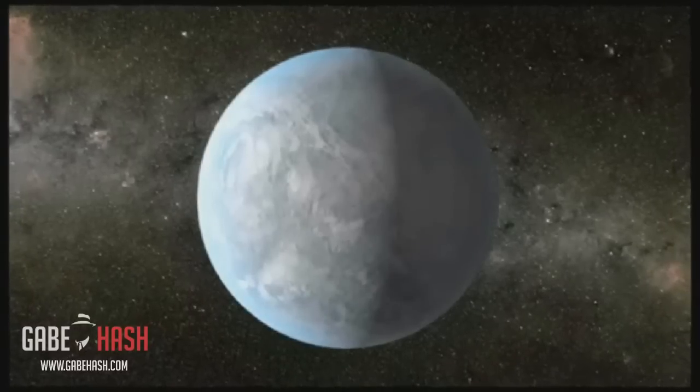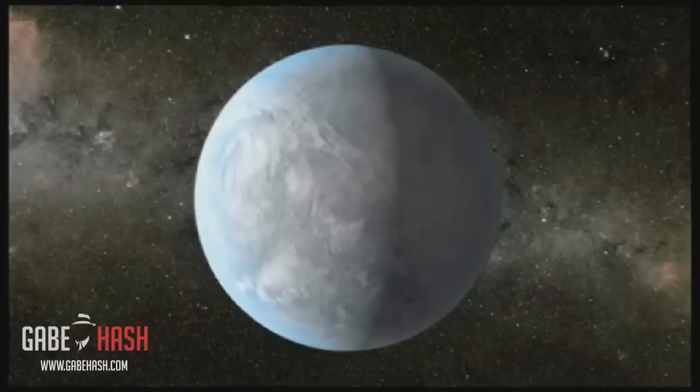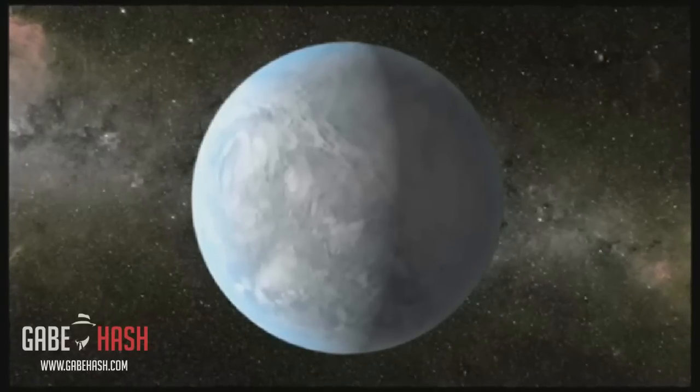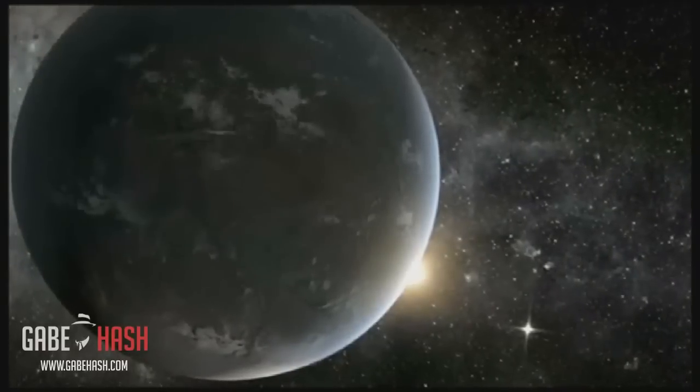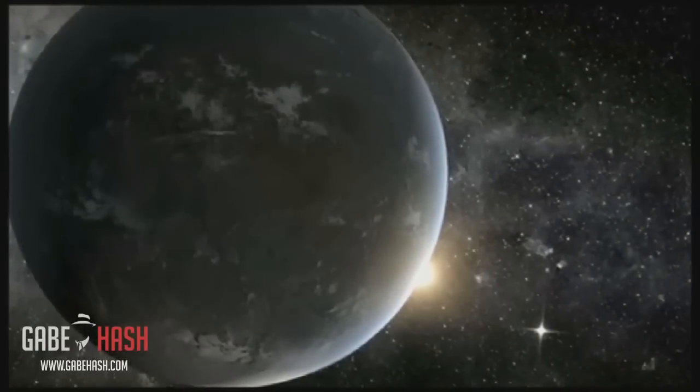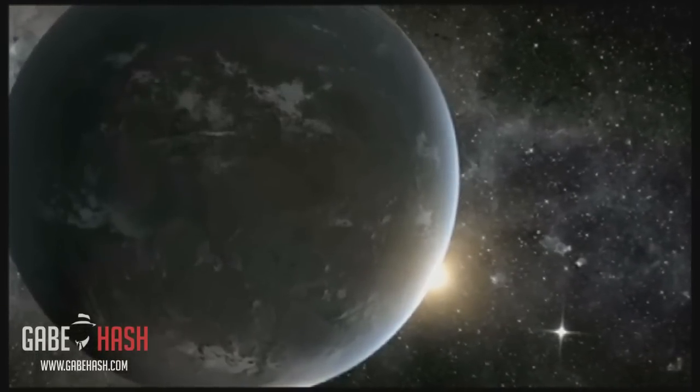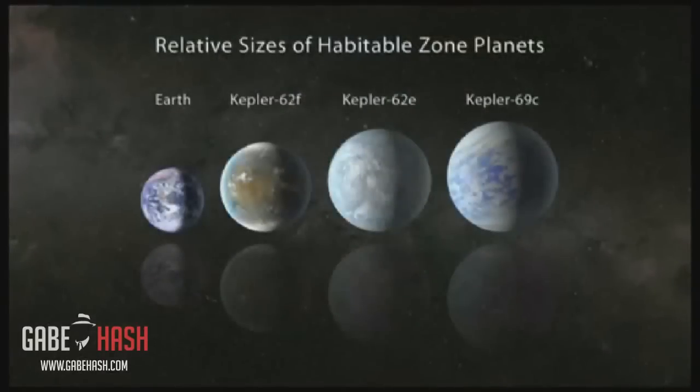NASA's Kepler mission has discovered three super-Earth-sized planets orbiting in the habitable zone of their stars. The habitable zone is the distance from a star where the surface temperature of an orbiting planet could be suitable for liquid water. Each of the three new planets is less than twice the size of Earth.